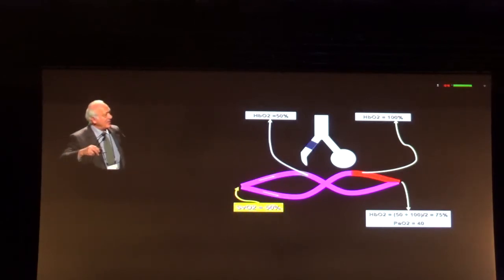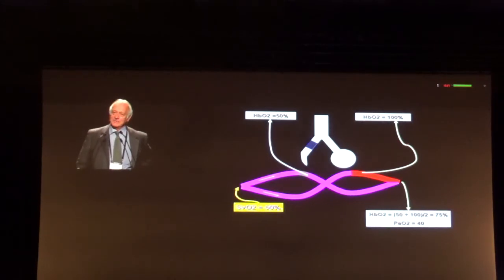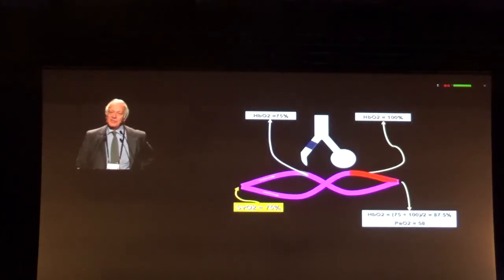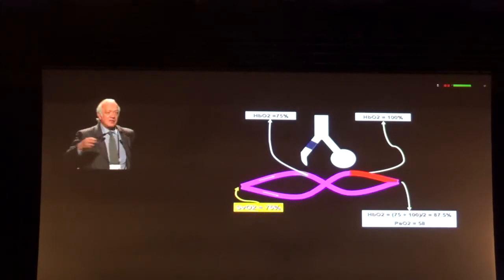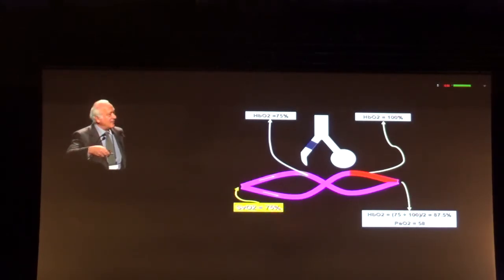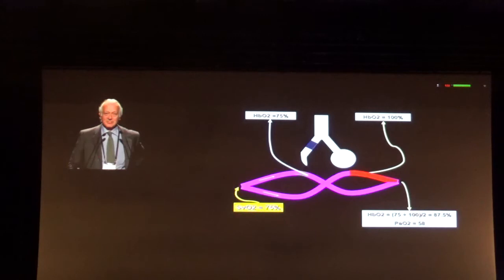If the shunt is 50%, the arterial saturation will be the mixture of 50% mixed venous blood and 50% arterialized blood. So if I mix 50% mixed venous saturation with 100% arterialized blood, I get 75% saturation, which corresponds roughly to a PO2 of 40. Now, if I apply Veno-Venous ECMO and raise mixed venous saturation from 50% to 75%, I will be mixing 75% with 100% and I will get 87.5% saturation — a PO2 of 58. That is not an excellent PO2, but it is a survivable PO2.